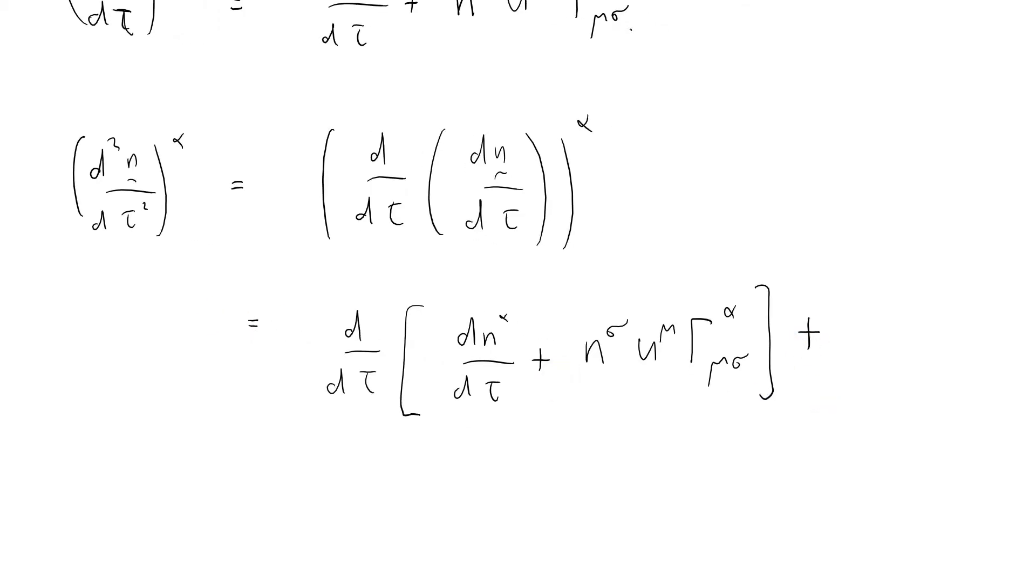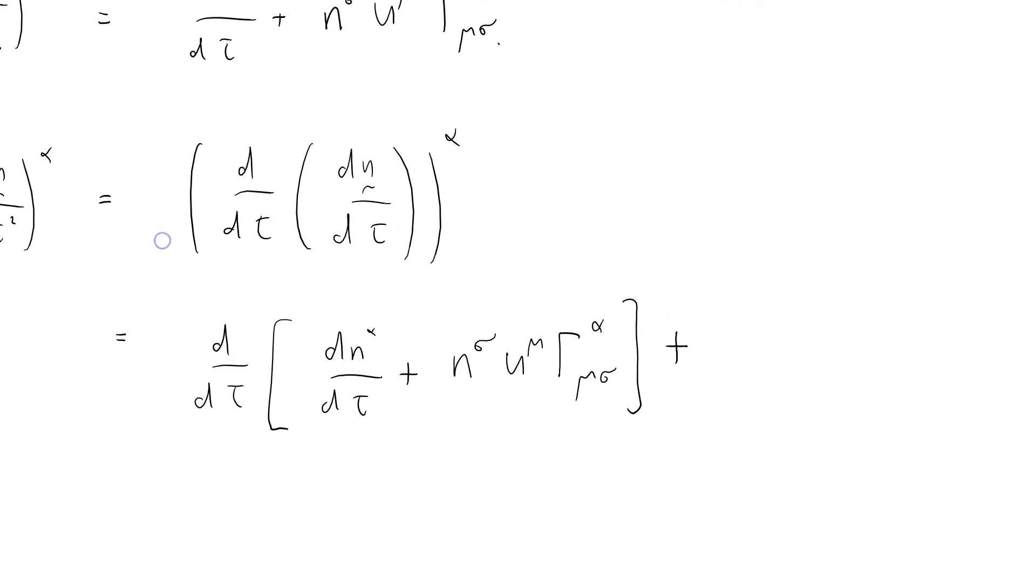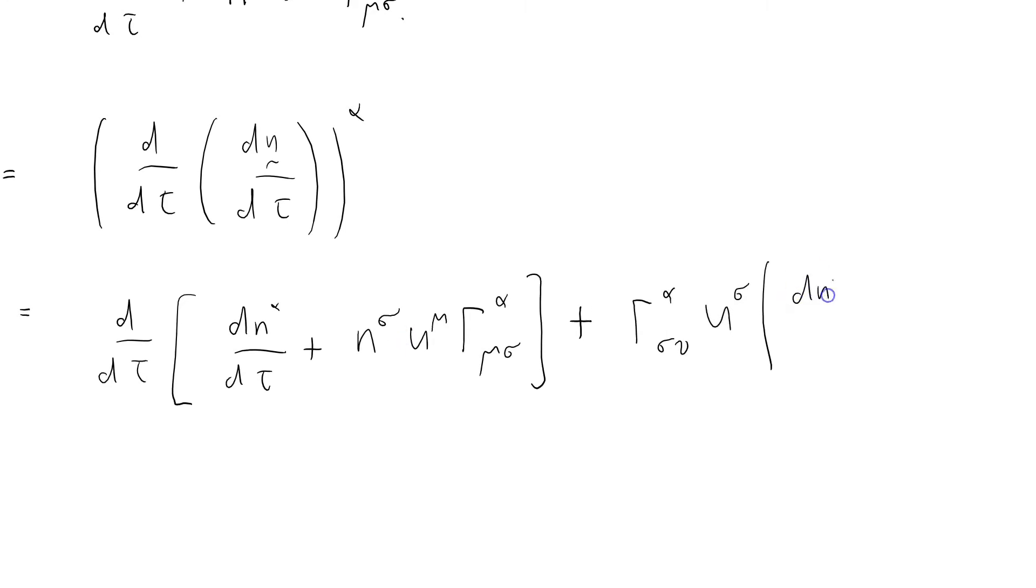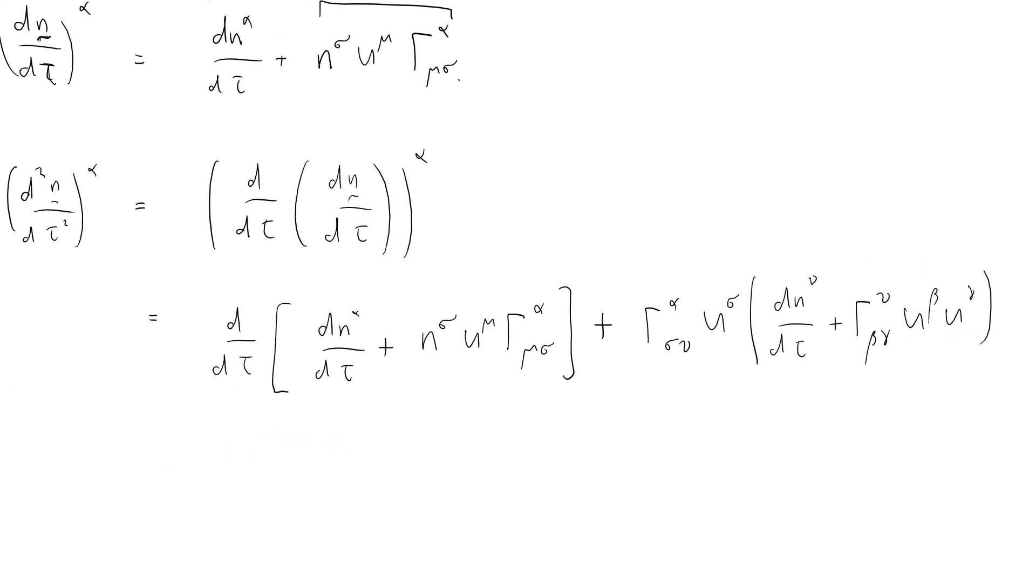Plus a correction term for the fact that we have coordinate systems that are themselves changing. So I need to add on another Christoffel symbol here alpha sigma nu, u sigma, and then we need d n nu by d tau plus Christoffel nu beta gamma u beta u gamma. Have I got any other brackets to close? No, I haven't.